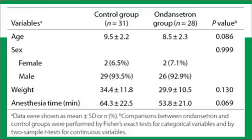Here we see another Table 1 from a clinical trial. It again gives us the baseline characteristics of age, gender, and weight, plus one more characteristic specific to that study. Interestingly, in this one we get p-values, and at the bottom you'll notice it talks about how those p-values were calculated. It's a nice thing in Table 1to see how the statistics were calculated. In this study, they said that comparisons between the two groups were performed by Fischer's exact tests for categorical variables and a two-sample t-test for continuous variables.